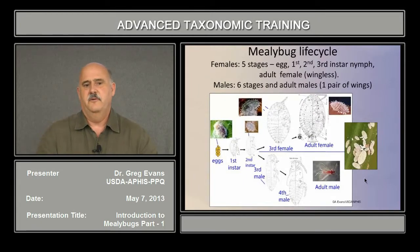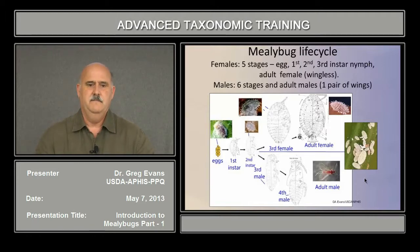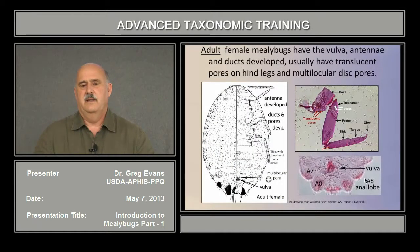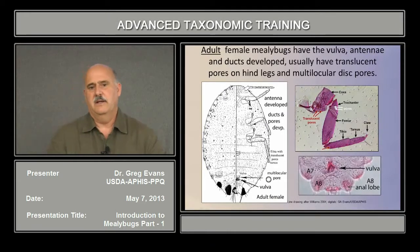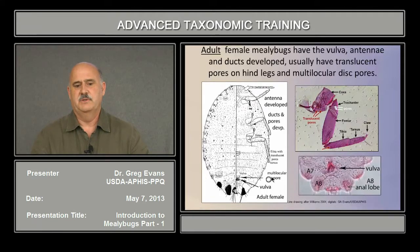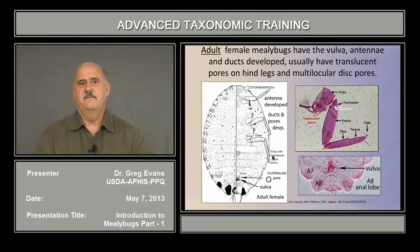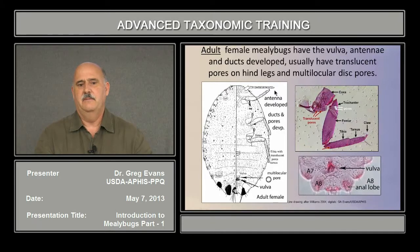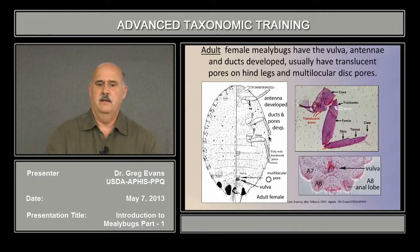Female mealybugs go through five stages: the egg stage, three nymphal stages, and then the adult female, which is wingless. Males go through an additional stage and have one pair of wings as an adult. Adult female mealybugs can be identified by the vulva, located on the venter around the seventh abdominal segment. Also, the antennae aren't fully developed in immature stages — species that normally have an eight- or nine-segment antennae may only have six or seven segments in immature stages.